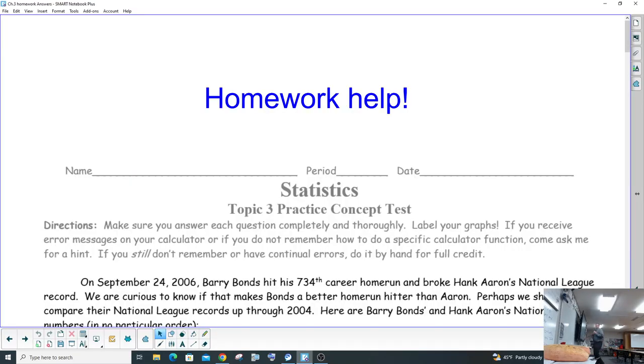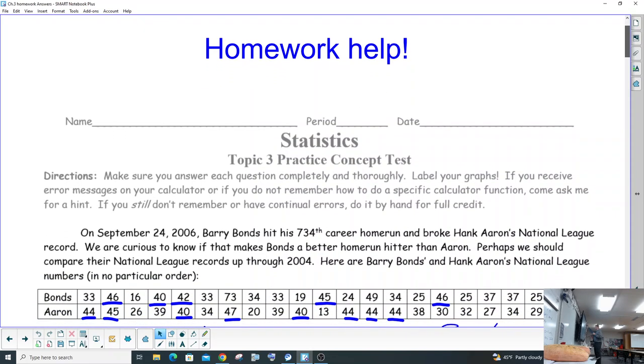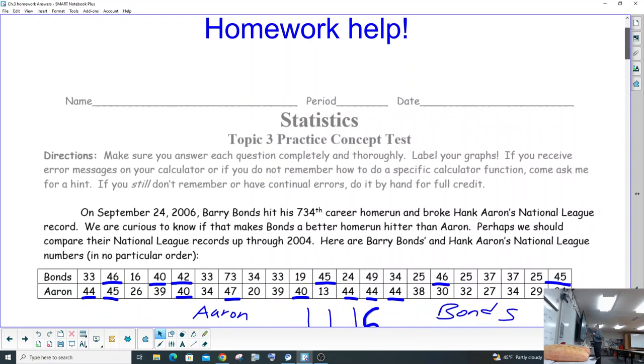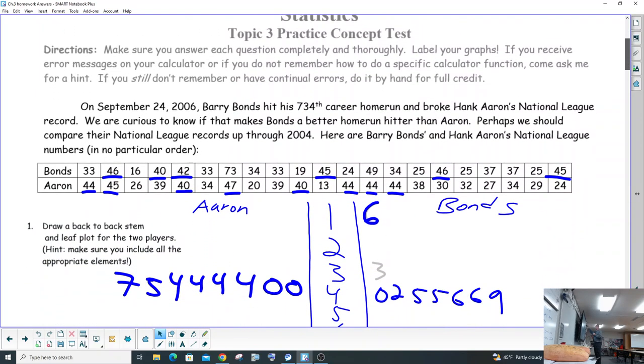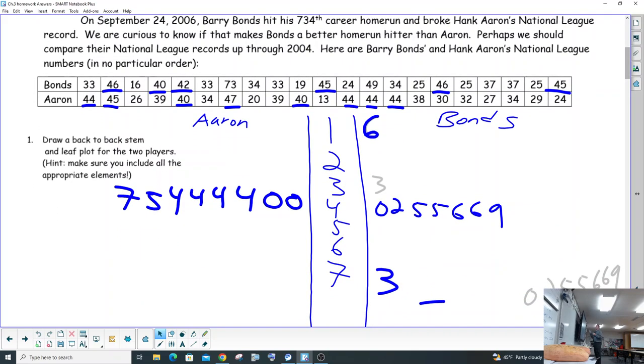We're gonna squash statistics. So we're helping you guys on topic three practice test. We're gonna do a Hank Aaron versus Barry Bonds assignment here, practice test with stem and leaf plots. If you look through your data, you're gonna see the smallest number of home runs was in the teens.